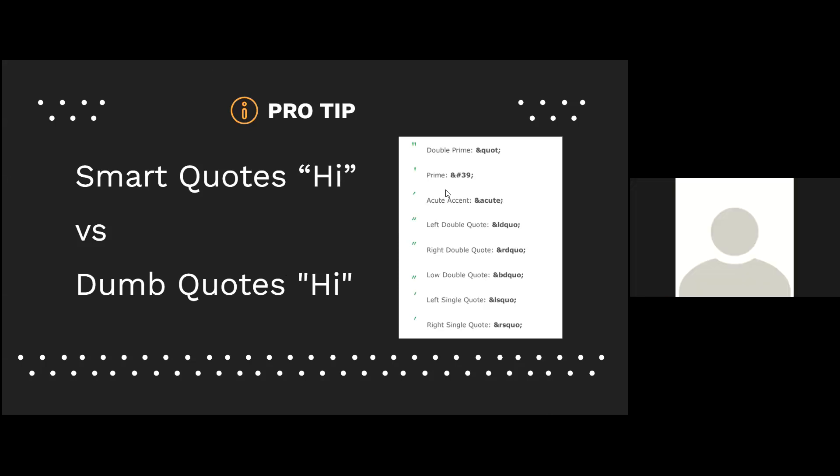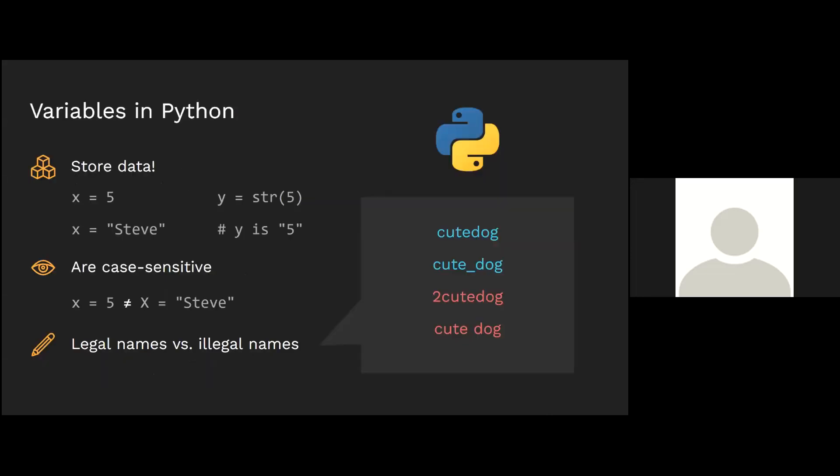What are variables? In math, variables change according to whatever problem we're doing — sometimes we know the value and sometimes we don't. The same idea applies in programming: variables are values that can change depending on what we're doing in our program. Variables essentially store data and store it as different types like integers, strings, or floats. In Python specifically, we don't have to declare the type — if we want x to equal five, we just write x equals five.